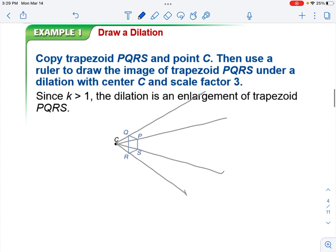Okay, so if we do an example, we are going to copy this trapezoid PQRS and point C. We can just do it on our iPad. It'll be a little hard for you to see what I'm doing. I'll just have to talk you through it. And then use a ruler to draw the image of trapezoid PQRS under the dilation with center C and scale factor of 3.